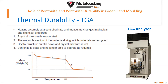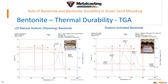Let us take two case studies and understand how natural sodium bentonite and sodium-activated bentonite differ. In the left-hand side TGA graph, you can see that from around 250°C to 400°C, the drop in mass is very low. The sample slowly keeps losing mass up to 600°C, and subsequently after 600°C, it loses mass very quickly.